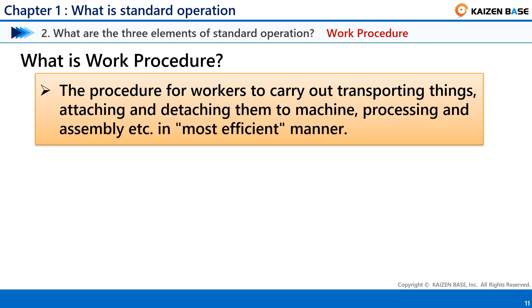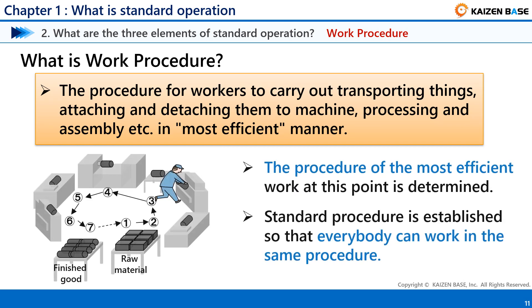The second element is Work Procedure. This is the procedure for workers to carry out transporting things, attaching and detaching them to machines, processing, and assembly in the most efficient manner. The Work Procedure is the most efficient work order at present. As shown in this image, it is important that the procedure is established — like steps 1, 2, 3 — so that everyone can do the same work.